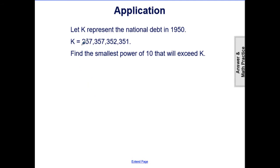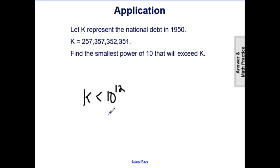Let's try another application. Let K represent the national debt in 1950. This number K has twelve digits and is smaller than a whole number with thirteen digits. Therefore K is less than ten to the twelfth, so our answer — the smallest power of ten that exceeds K — has an exponent of twelve.